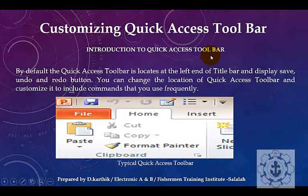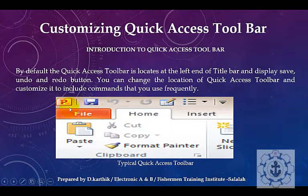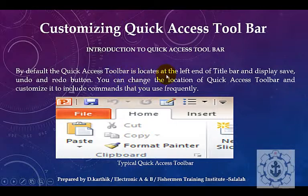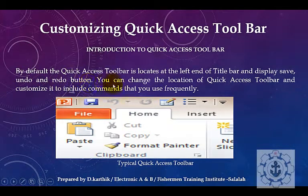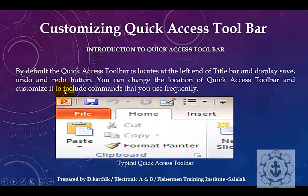Introduction to Quick Access Toolbar. Here you can see a diagram. This is called the Quick Access Toolbar. By default, the Quick Access Toolbar is located at the left end of the title bar, and displays Save, Undo, and Redo buttons. You can change the location of the Quick Access Toolbar and customize it to include commands that you use frequently.